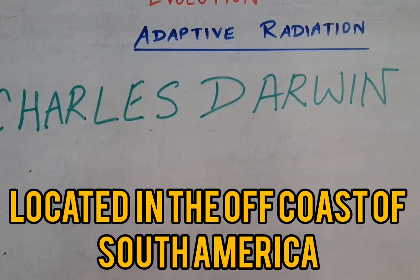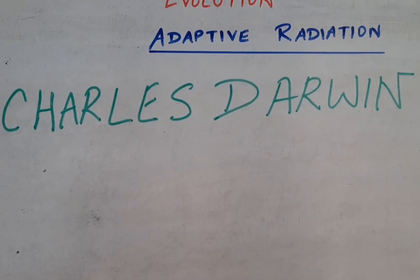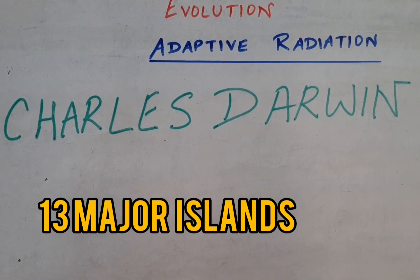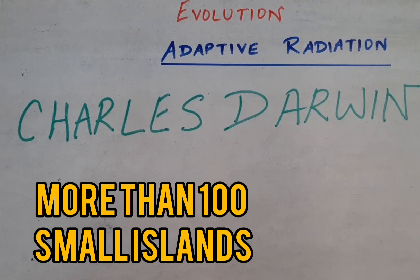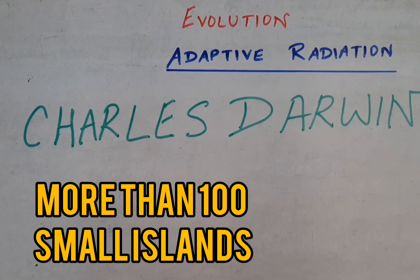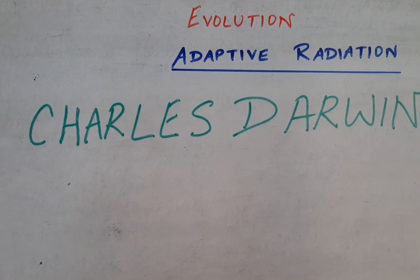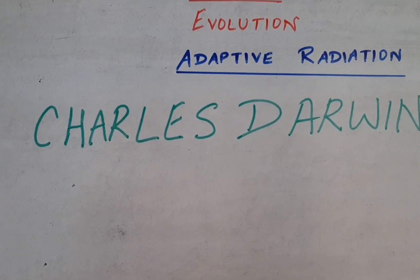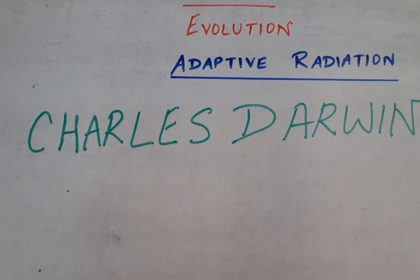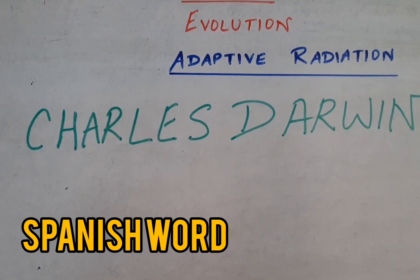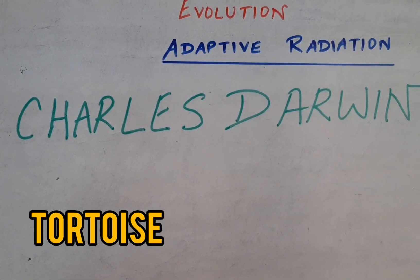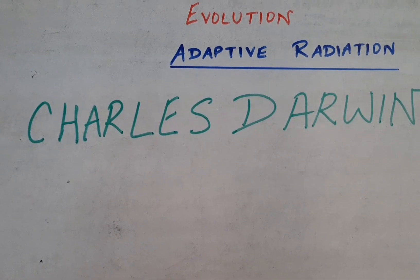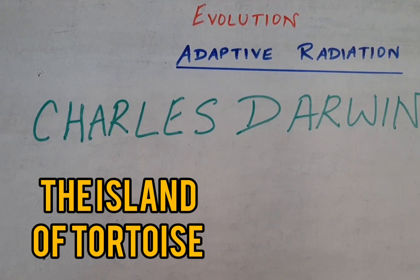The Galapagos Islands make up an archipelago of 13 major islands and more than a hundred smaller islands that straddle the equator off the Ecuadorian coast. The word 'Galapagos' is an old Spanish word which means tortoise, so we can understand that Galapagos means the island of the tortoise.